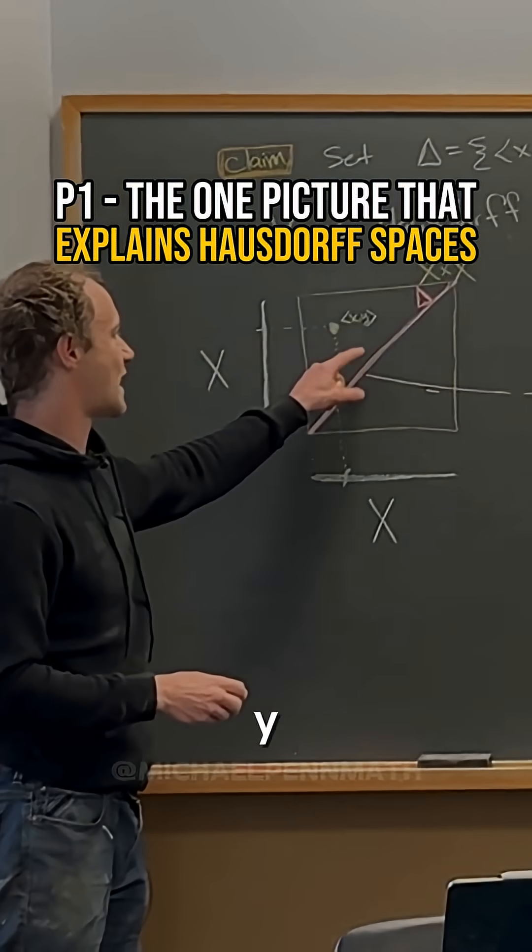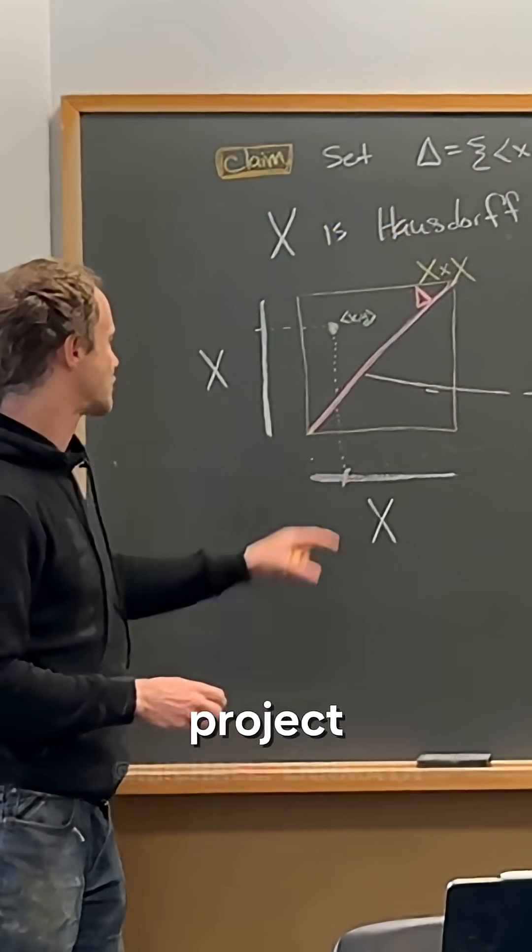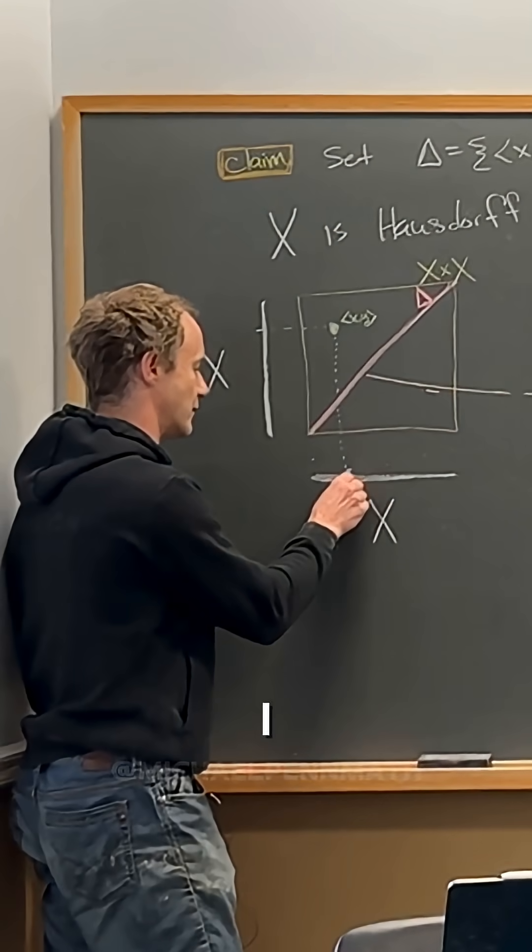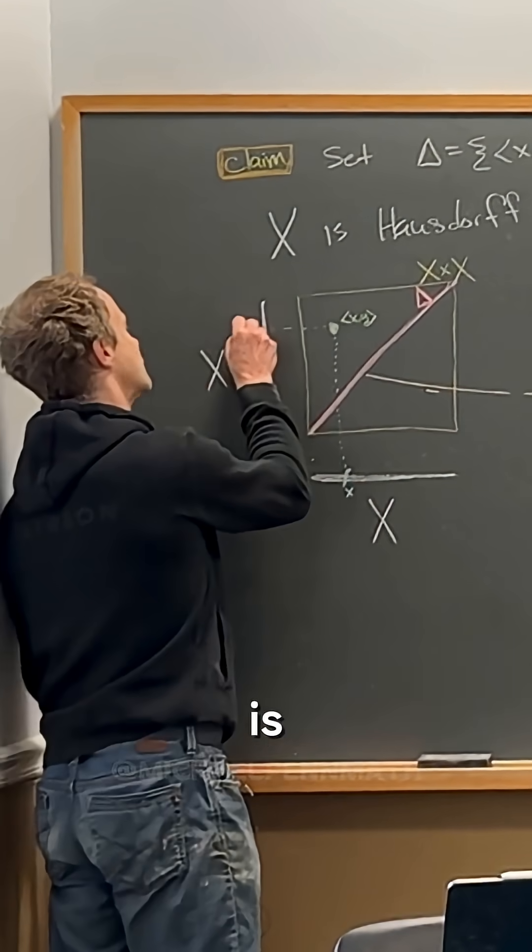So here's how to think about this. You've got this point (x,y), it's off the diagonal. I'm going to project - this is x down here. I think we could agree with that. And this is y right here.